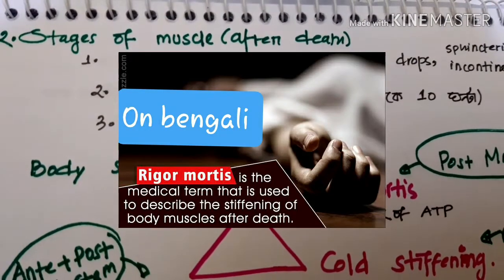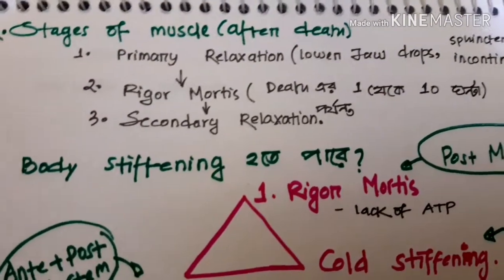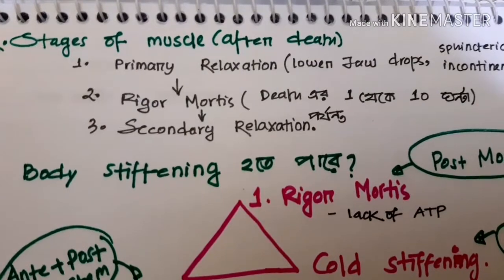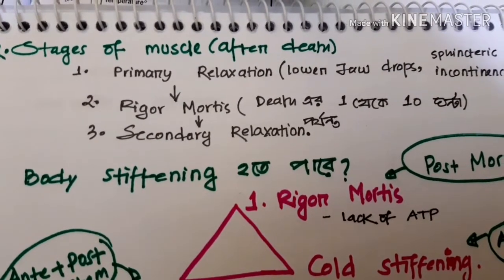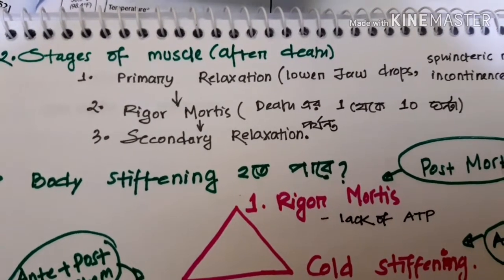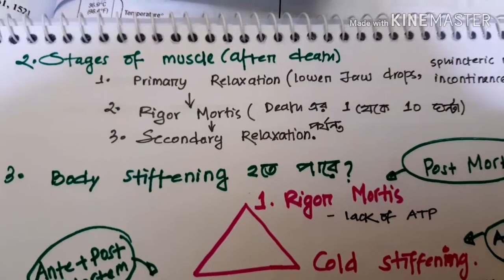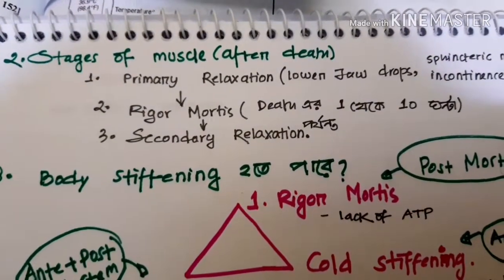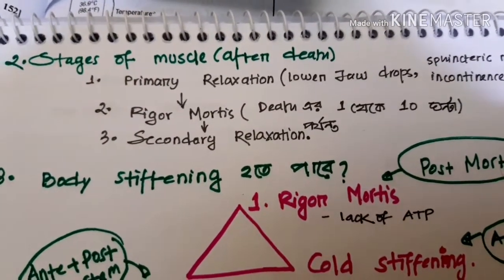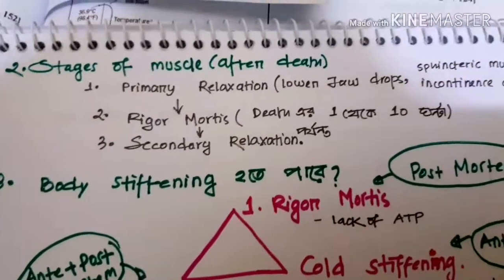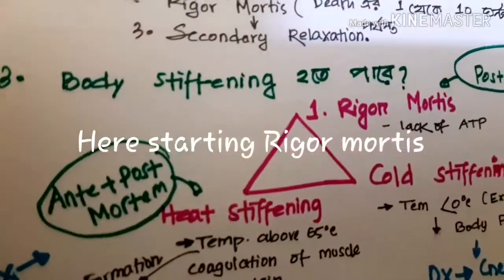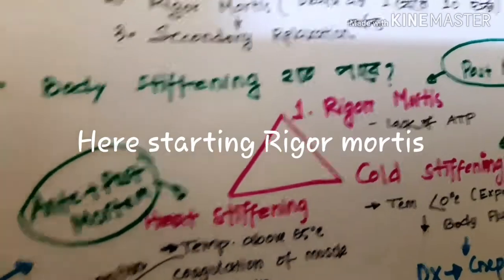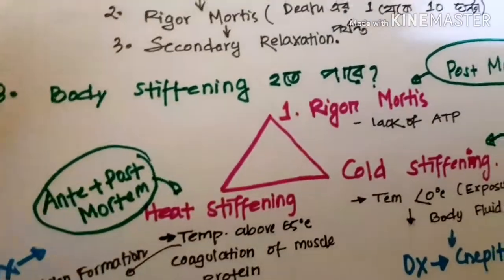After primary relaxation comes rigor mortis, and then secondary relaxation of our body. The word 'rigor' means stiffening, and 'mortis' means death. So rigor mortis refers to the strengthening and shortening of the muscles after death, followed eventually by secondary relaxation of the body.